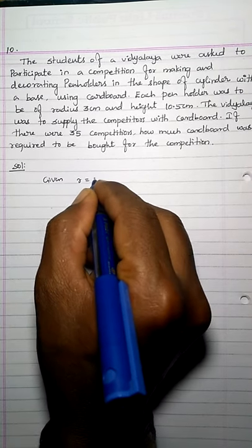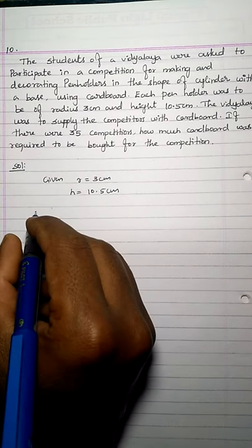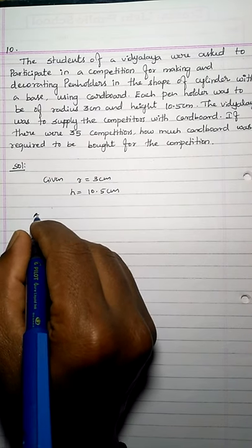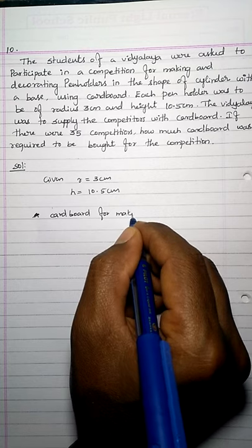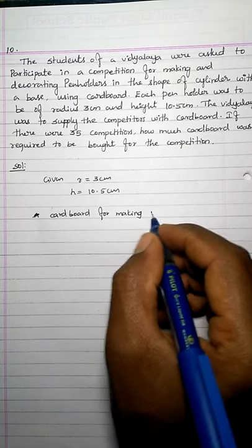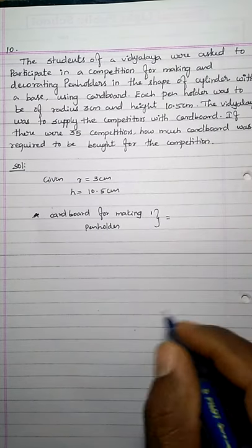Given data: radius R = 3 cm, height H = 10.5 cm. There are 35 competitors, each making one pen holder. First, let us find the cardboard required for one pen holder, then multiply by 35.